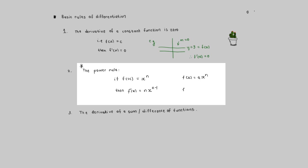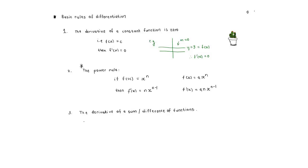If your term has a coefficient — so f of x equals a times x to the n — then you simply multiply the exponent by that coefficient: f prime of x equals a times n times x to the exponent n minus one. The only things you're doing are multiplying the coefficient by the exponent and reducing the exponent by one.